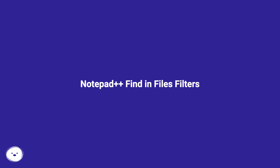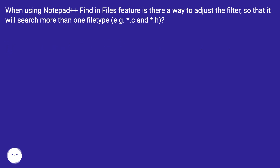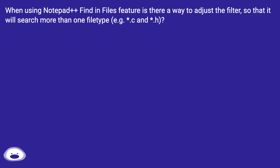Notepad++ Finding Files Filters. When using Notepad++'s Find in Files feature, is there a way to adjust the filter so that it will search more than one file type, e.g., *.c and *.h?